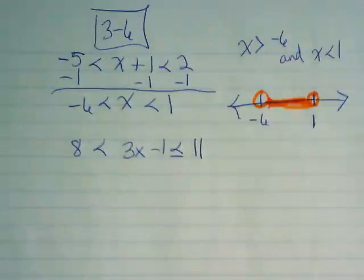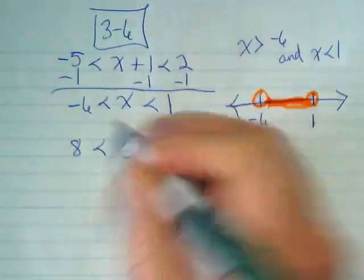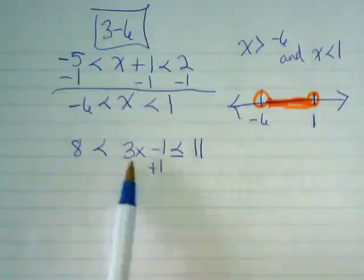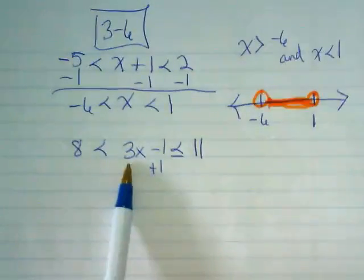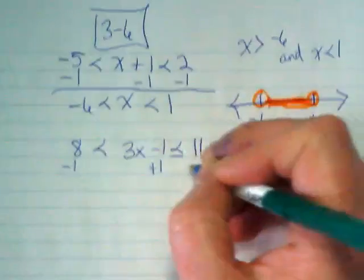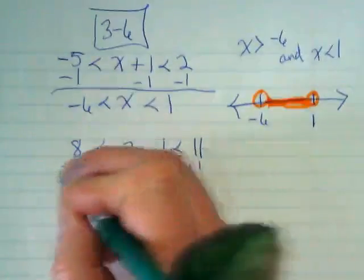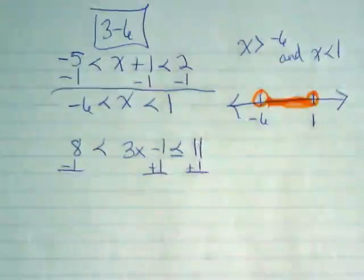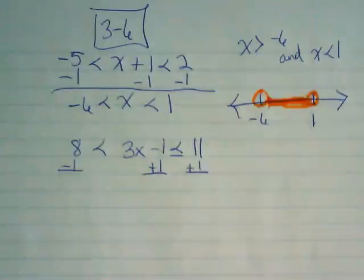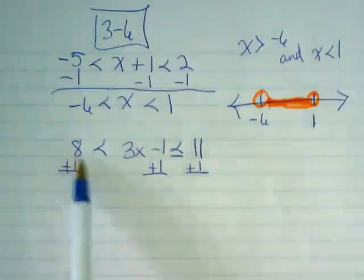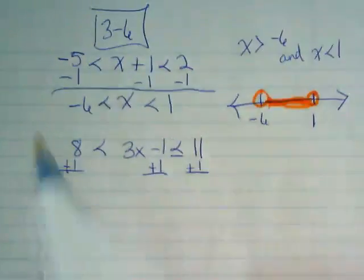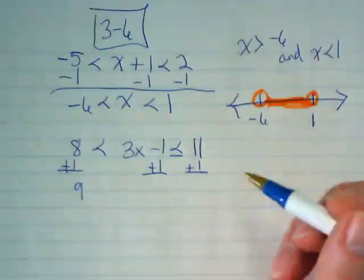First, I'm going to add the 1. Yes. I heard somebody say divide by 3, and that's true, because right now the x is being multiplied by the 3. But I always like to save the division for the end. Wait, don't we add one? Oops, thank you. I added it for the other two. I just messed up there. Good catch. And this is the reason I like to save the division for last. Often the numbers are going to be friendlier.